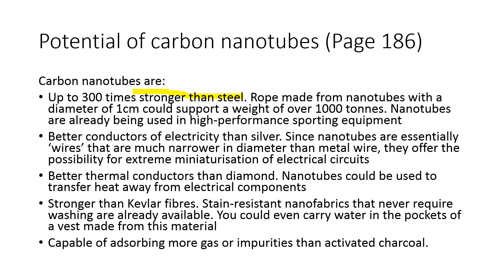Carbon nanotubes are up to 300 times stronger than steel. A rope made from nanotubes with a diameter of one centimeter could support a weight of over 1,000 tons. Nanotubes are already used in high-performance sporting equipment. They are better conductors of electricity than silver. Since nanotubes are essentially wires much narrower in diameter than metal wire, they offer the prospect for extreme miniaturization of electrical circuits.